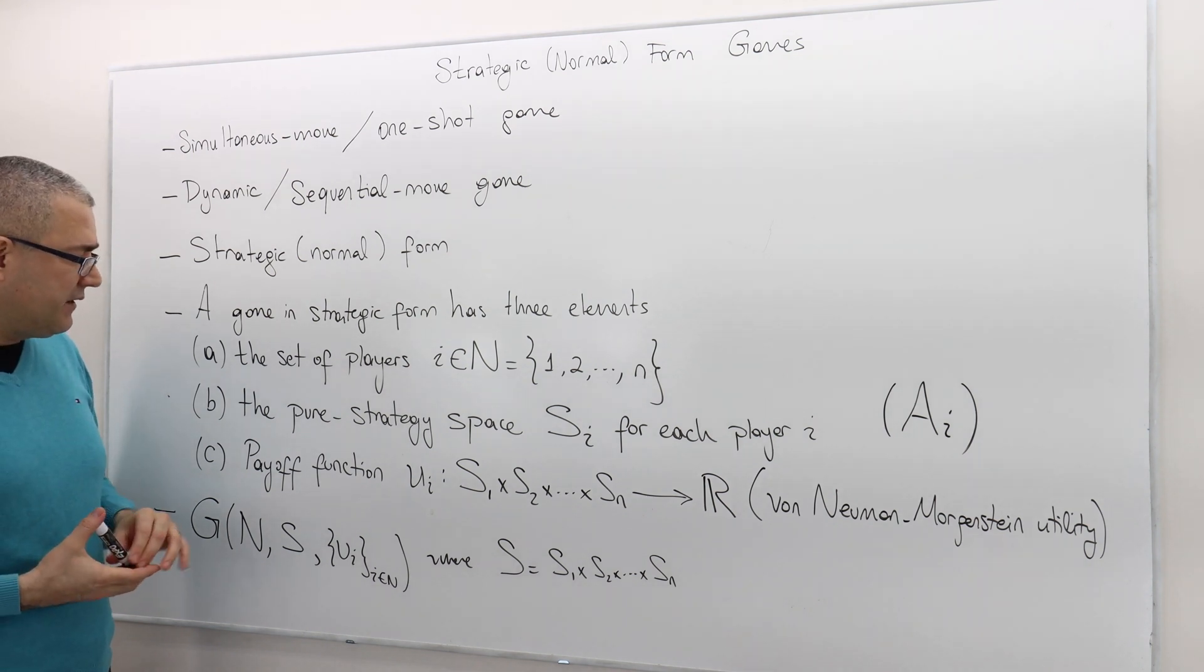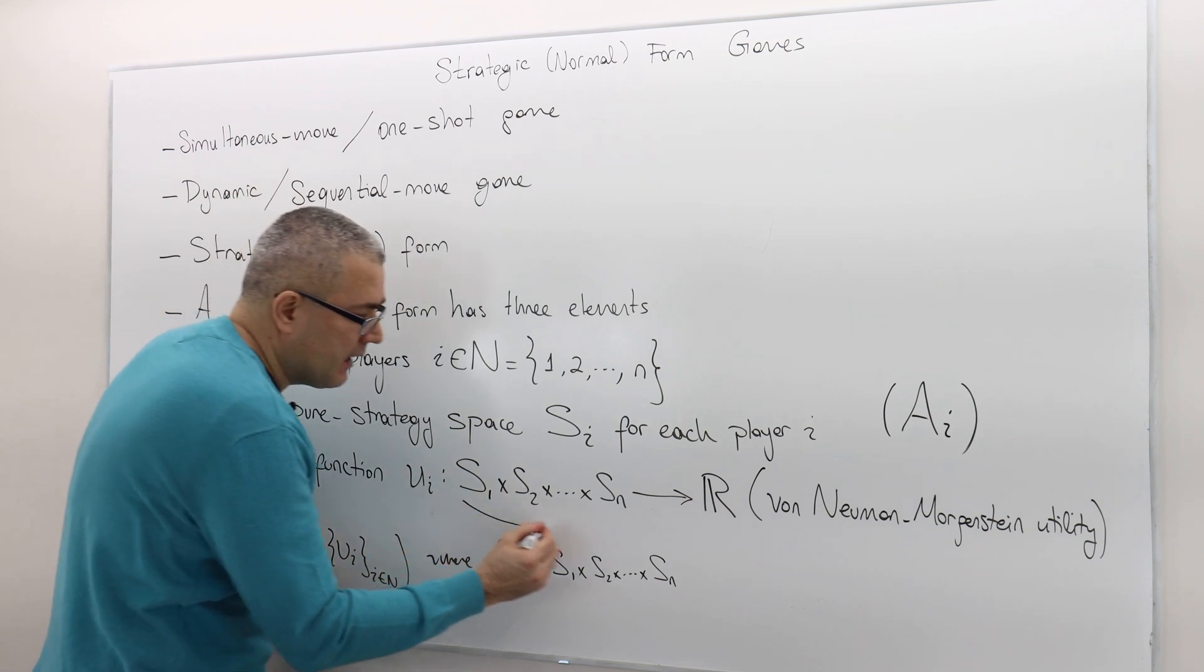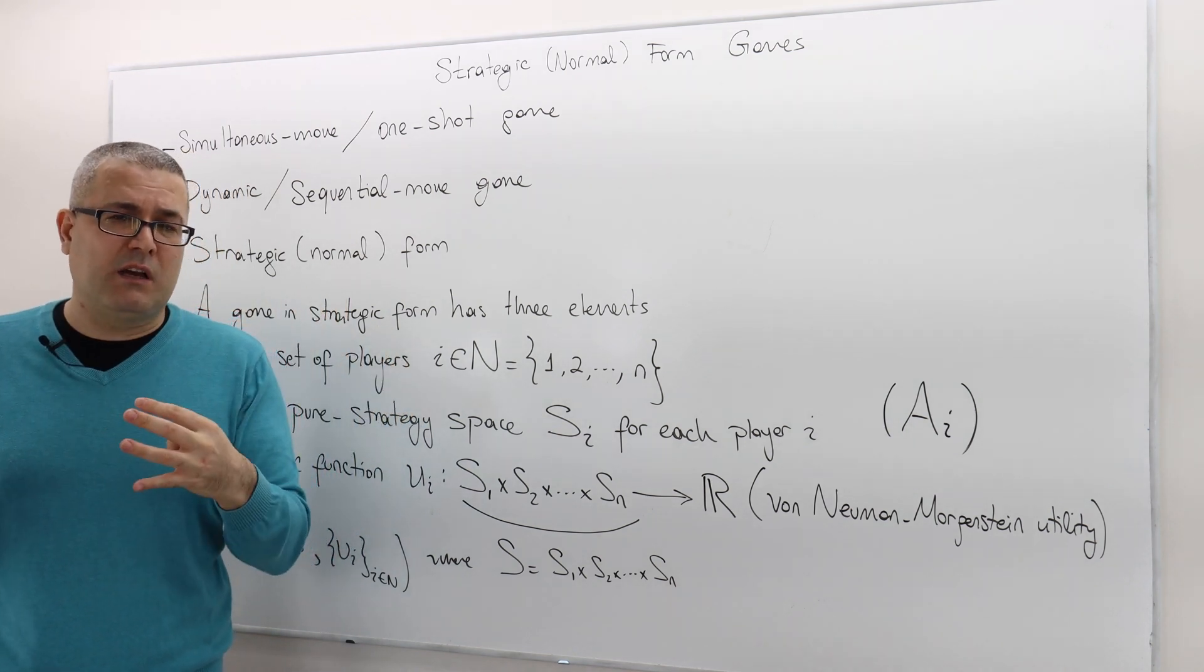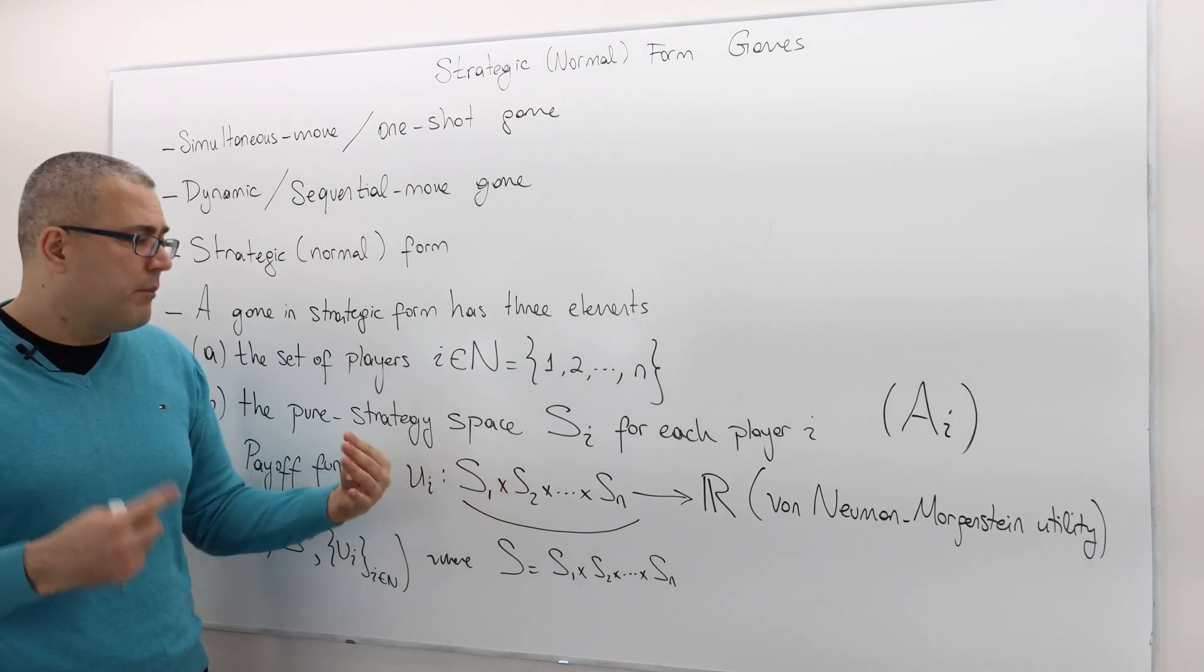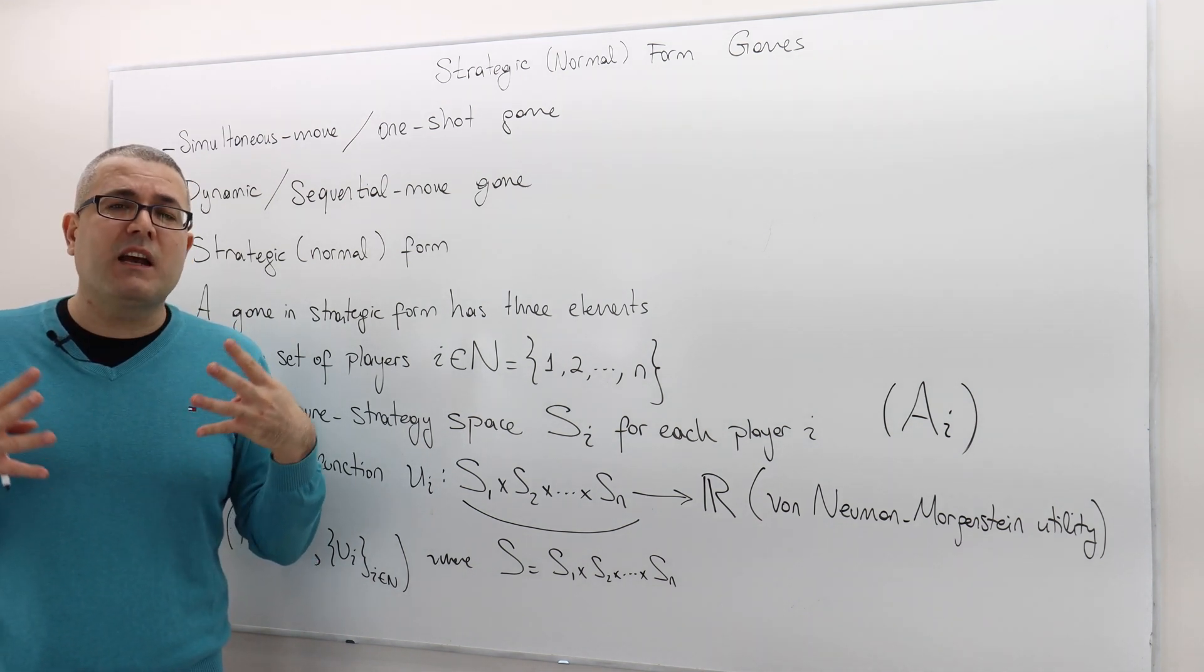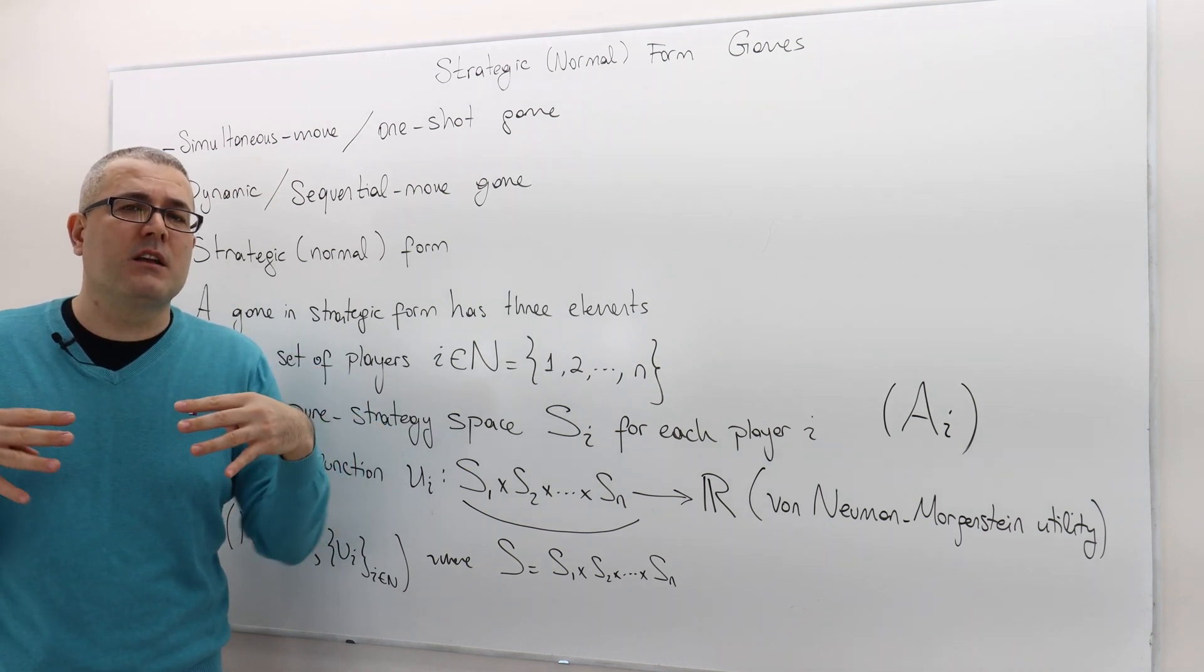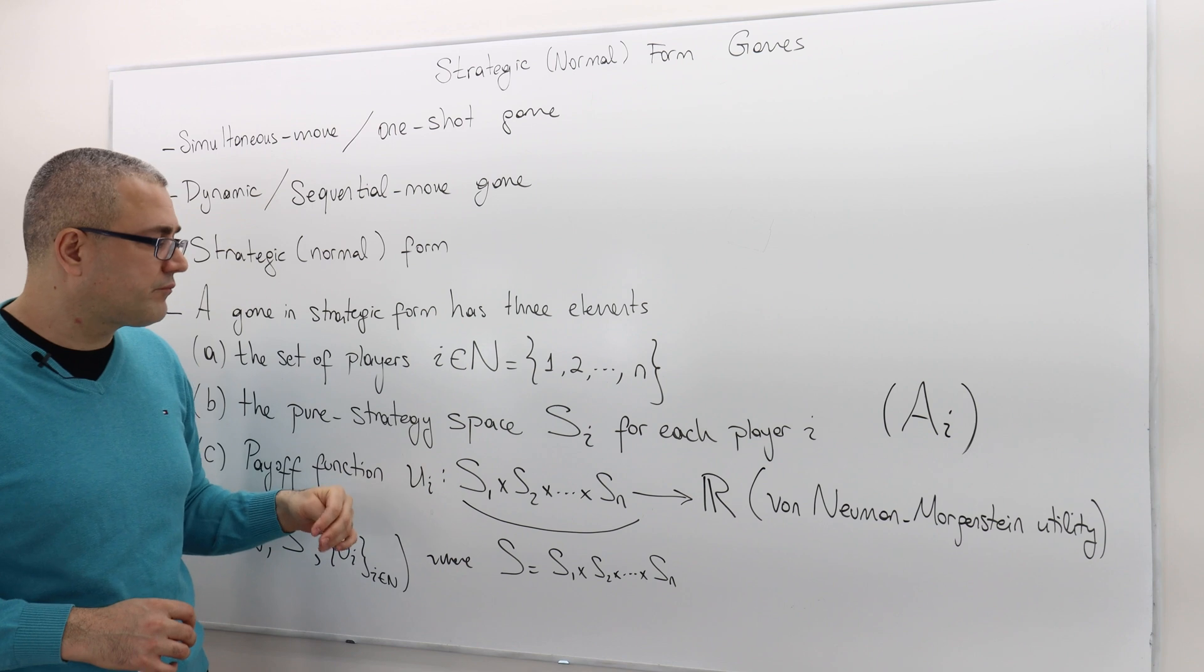And the third main ingredient is the payoff function. And these are von Neumann Morgenstern utility functions, which basically maps each strategy profile to a real number, positive, negative, doesn't matter, but some real. So every strategy profile is associated with a real number, a payoff. First off, why my utility depends on not only my strategy, S I, but also on the other player's strategy. That's the key thing about the game theory. So remember, game theory is a multi-person decision making, a strategic environment where a well-being or payoff of a player or someone doesn't depend only on his own actions, but also depends on the other's actions. So for that reason, your payoff will depend on all the player's actions.